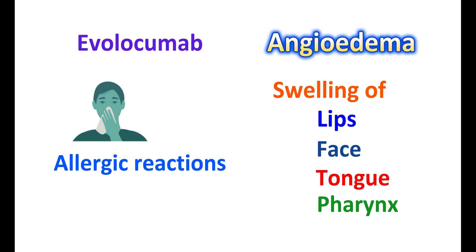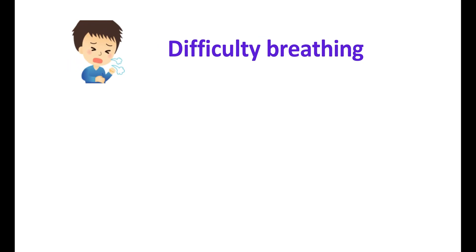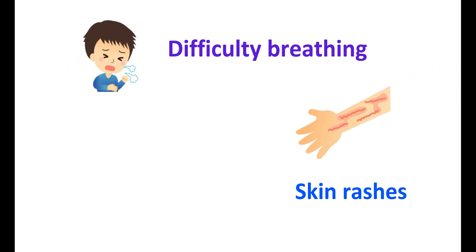Even though rare, Evolocumab can produce other allergic reactions like difficulty breathing, skin rashes, bumps on the skin, redness of the skin, and severe itching. These may indicate severe allergic reactions, and in such cases this drug should be discontinued. However, these are rare and not observed in all people. In some people, Evolocumab injection may produce pain and redness at the site of injection, which slowly disappears and may not indicate a severe allergic reaction.